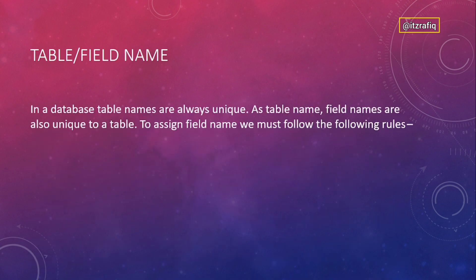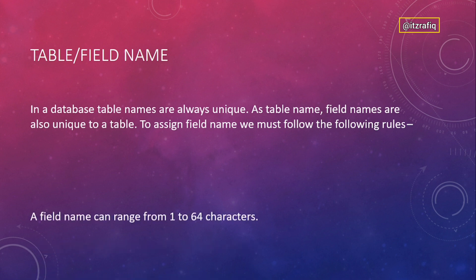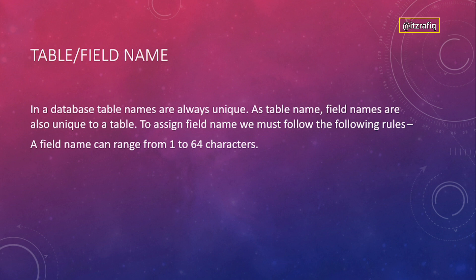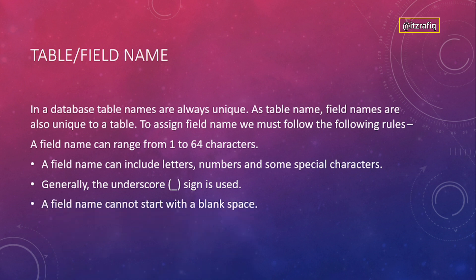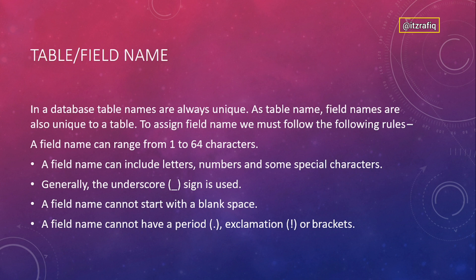Table and field names in an MS Access database are always unique — you cannot create two tables with the same name, and inside a table the field names must also be unique. Rules for field names: a field name can range from 1 to 64 characters. It can include letters, alphabets, and some special characters — we generally use underscore to join two words. A field name cannot start with a blank space, and it cannot contain a period, exclamation mark, or brackets.